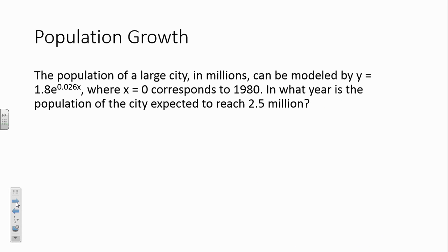Here's a population growth problem. Population growth of a large city in millions. Unfortunately, I didn't have time to go find some actual calculations of Los Angeles or some other city, but we'll just take this made-up problem. So it can be modeled by 1.8 E to the 0.026X, where X equals 0 corresponds to 1980. We're going to plug in 2.5 million to Y. So 2.5 equals 1.8 E to the 0.026X, because we want to figure out when is it reaching 2.5 million. Y is my population. X is my year.